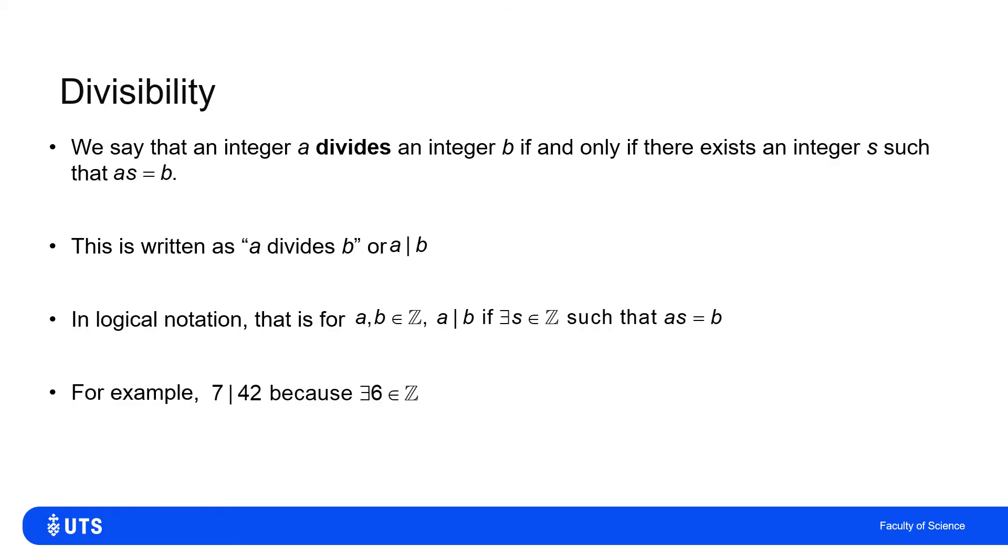Again, getting a little bit less abstract, we would say that seven divides 42 because there is an integer and it's equal to six such that seven times six is 42 and six is an integer. But I would say that 10 does not divide 42 because there is no integer, there is no s belonging to Z such that 10 times s is 42. Yes, I can multiply 10 by something to get the answer 42. It's 4.2, but that is not a member of the set of integers.